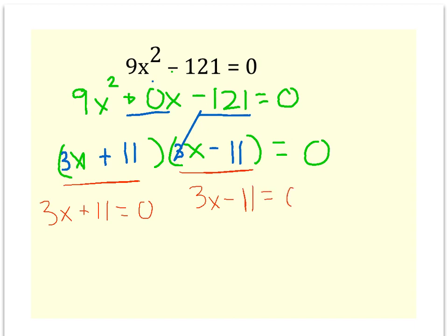3x minus 11 equals 0. So we subtract 11, I get 3x equals negative 11, divide both sides by 3, I get an x equals negative 11 thirds. You could change it to a decimal if you wanted, but you might as well just keep the answer like that.